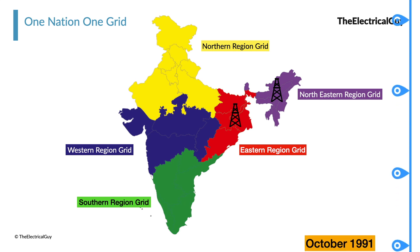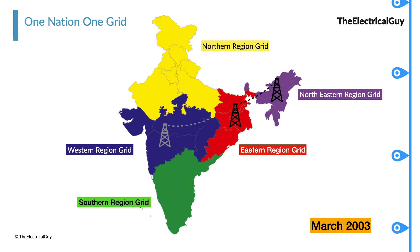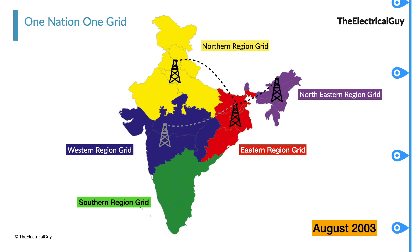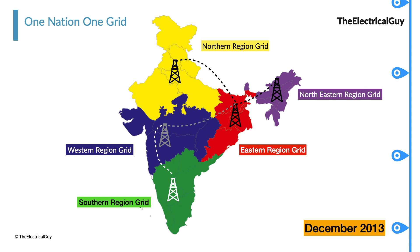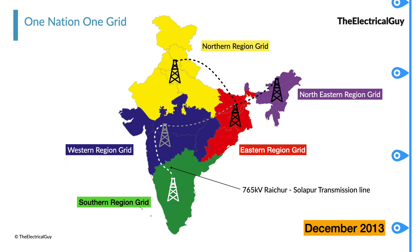In October 1991, the Northeastern and Eastern grids were connected, and power exchange between the two regions started. In March 2003, the Western region was connected to the Eastern and Northeastern regions, and these three regions began exchanging power. In August 2006, the North and Eastern grids were interconnected, thereby making four regional grids — Northern, Eastern, Western and Northeastern — synchronously connected and forming one central grid operating at one frequency. Then on 31st December 2013, the Southern region was connected to the central grid in synchronous mode with the commissioning of the 765 kV Raichur-Solapur transmission line, thereby achieving One Nation, One Grid and One Frequency.